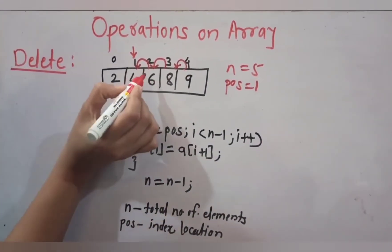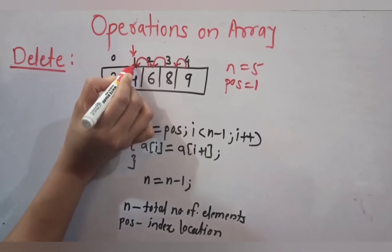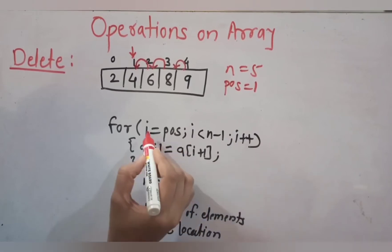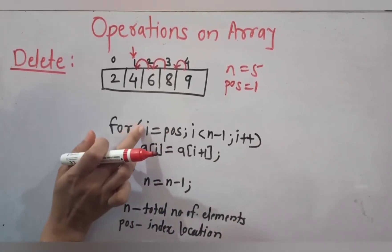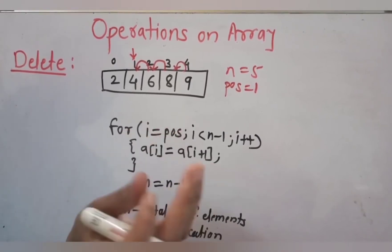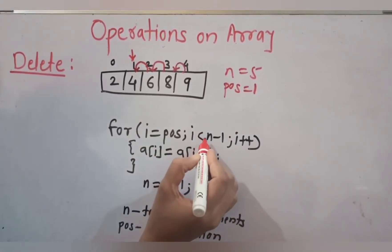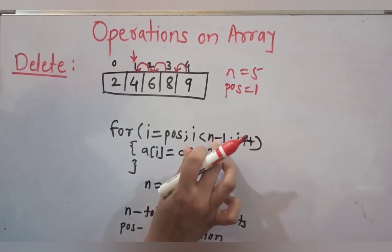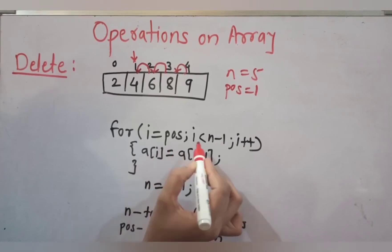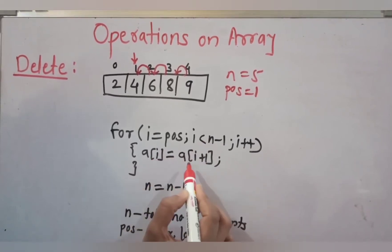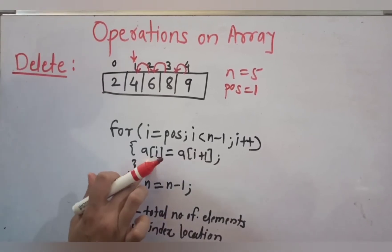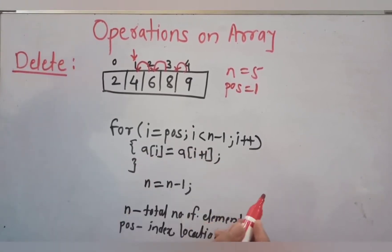What we have to do is copy each next element into the previous position. We use a for loop with counter variable `i`, initialized to `position`. The condition is `i < n - 1`, where n is the total number of elements. When the condition is true, we execute `a[i] = a[i+1]`, copying the next element to the current position.